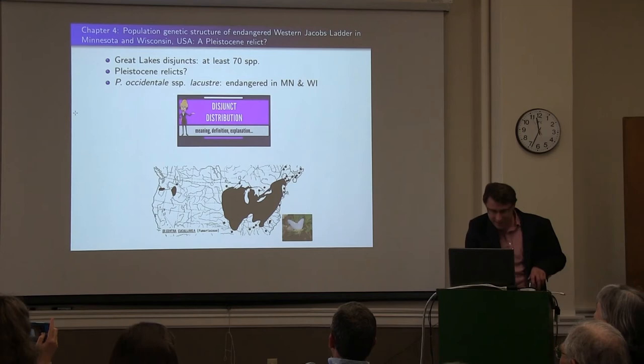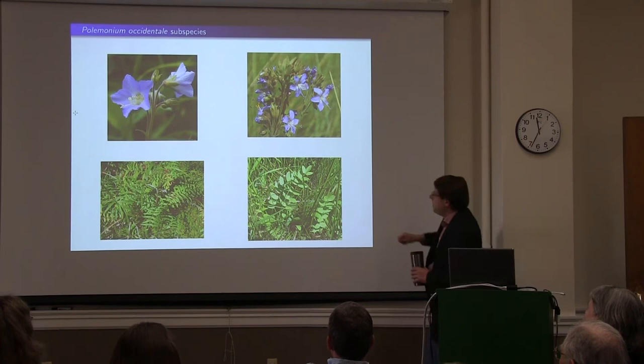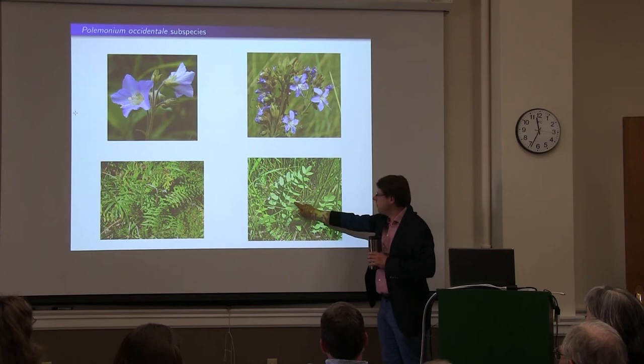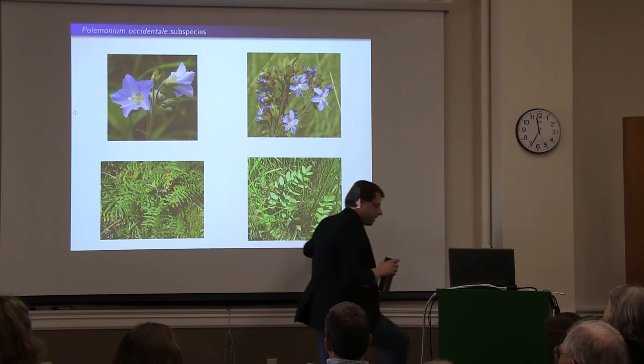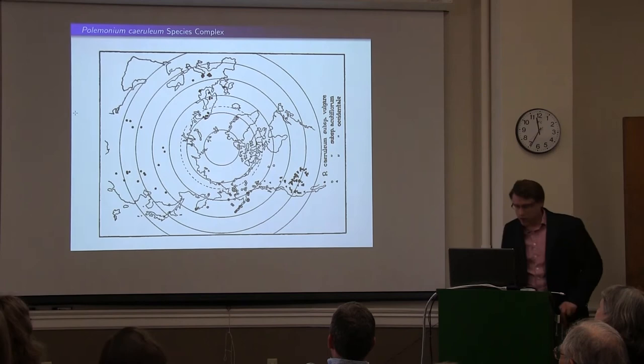This is what Polemonium occidentale looks like — a wetland species in western North America. Here is the type locality in western North America. Subspecies occidentale has yellow anthers and broader, more rounded leaflets. This is the subspecies lacustre, here in Wisconsin and Minnesota, with white anthers and much more linear leaflets — although there is a range of variation in western occidentale in terms of leaflet shape that approaches lacustre. This is all part of a circumboreal Polemonium caeruleum species complex.